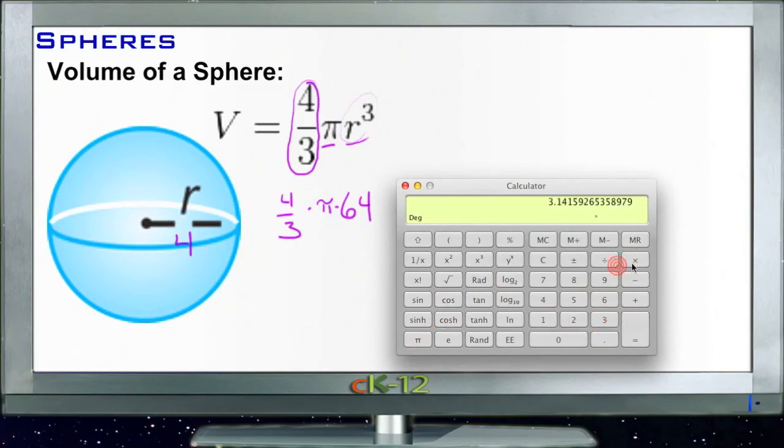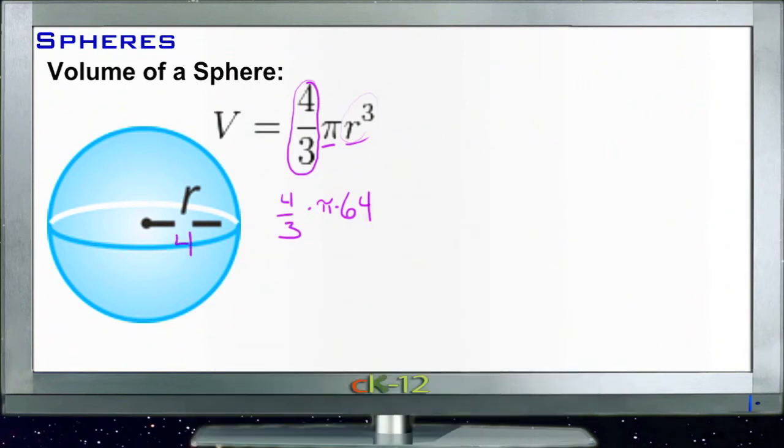Times π times 64 gives us 268 cubic units, or if you like to leave it in terms of π, you could just say 85 and 1 third π. So 268 cubic units or 85 and 1 third π cubic units.